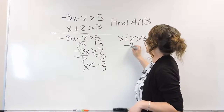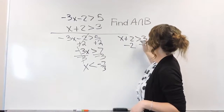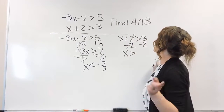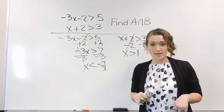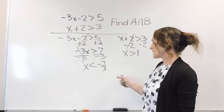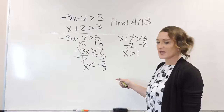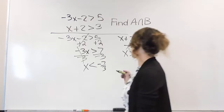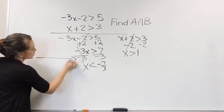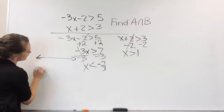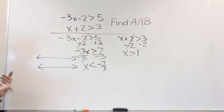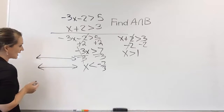Solving the other equation, all we have to do is subtract 2 on both sides and x is greater than 1. So we have our two solutions: x is less than negative 7 thirds, and x is greater than 1. I recommend graphing both of them so you can get a better idea of what this looks like.